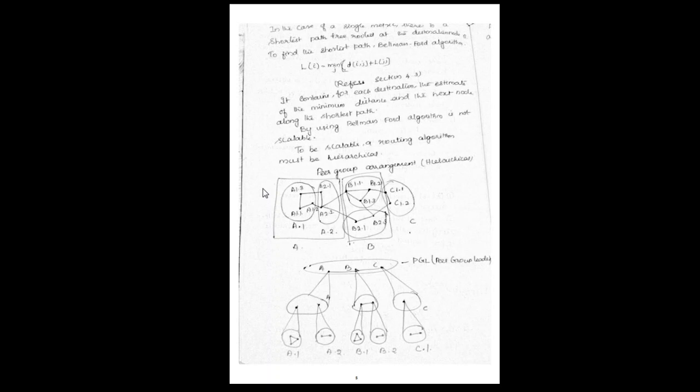You can find out the shortest path using the Bellman-Ford algorithm. By knowing the link state parameters, you can calculate the node values, and from that you can specify the route or shortest path.